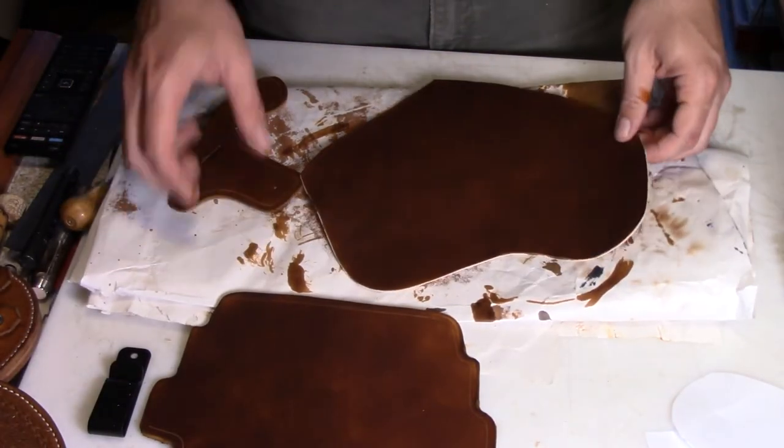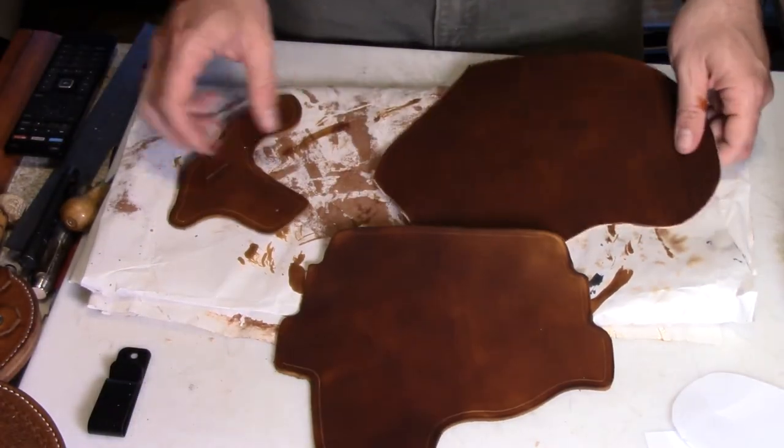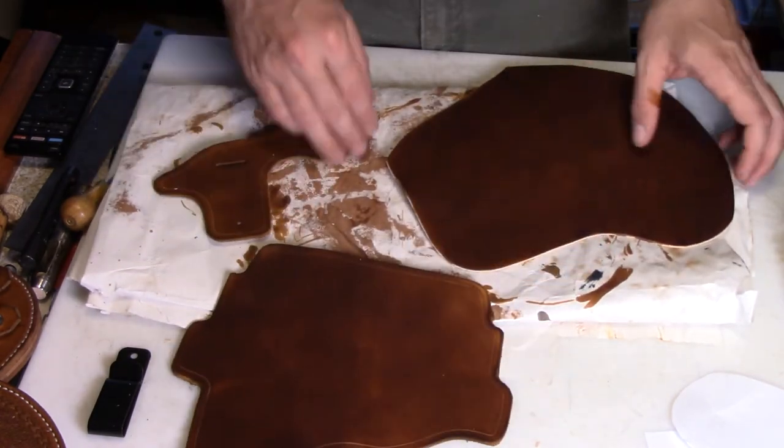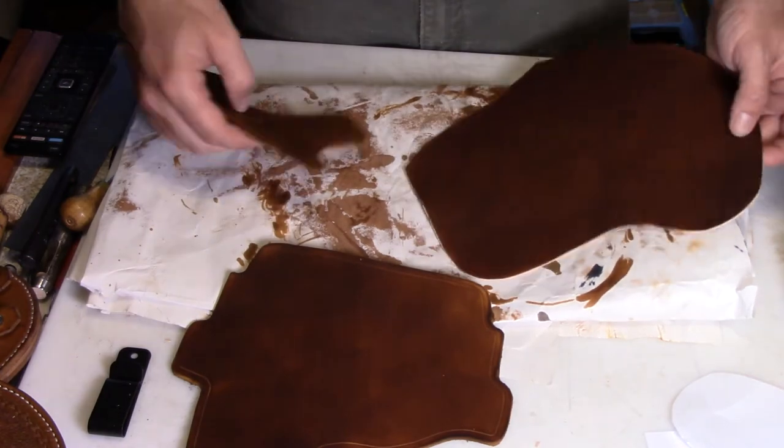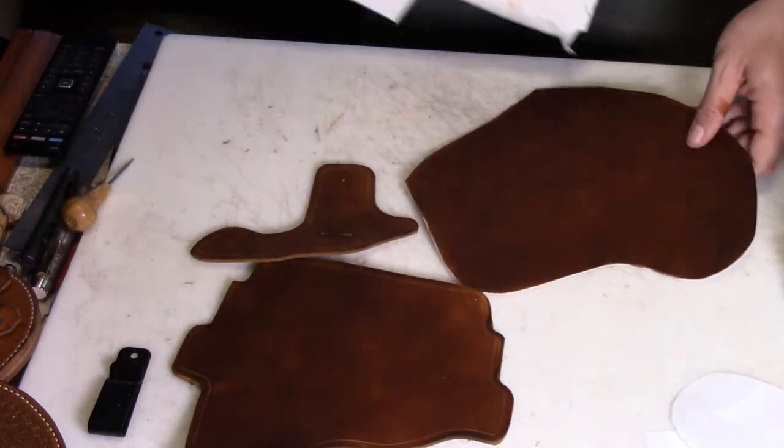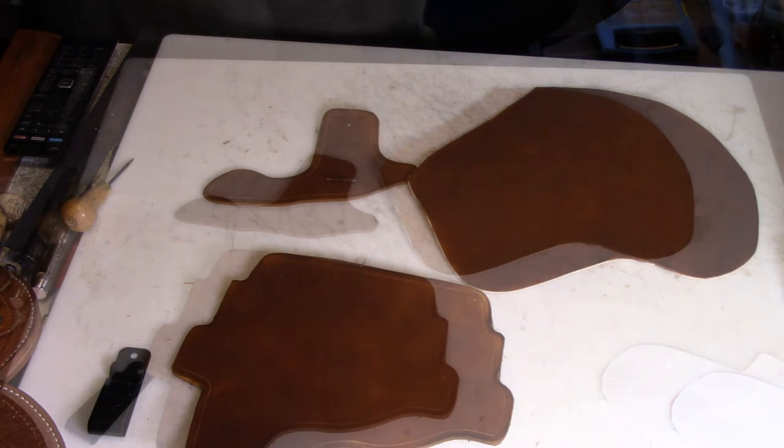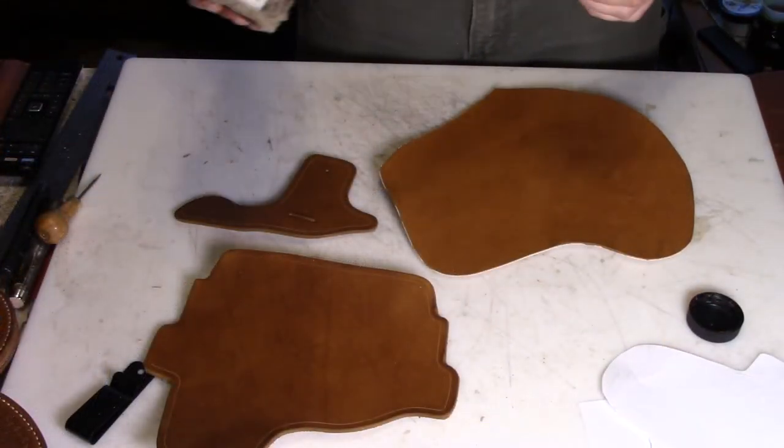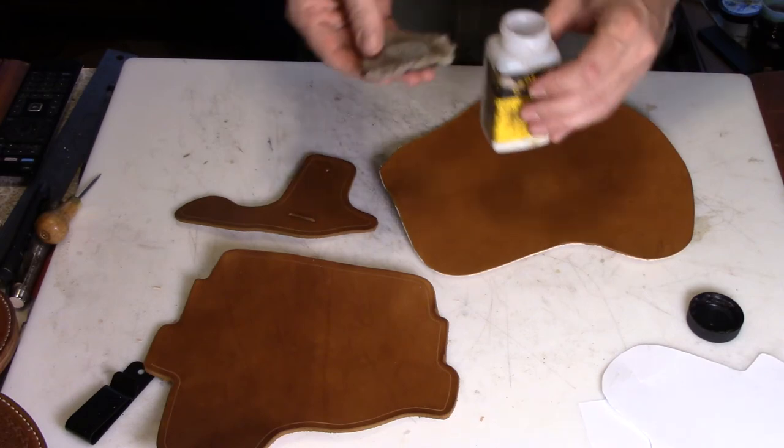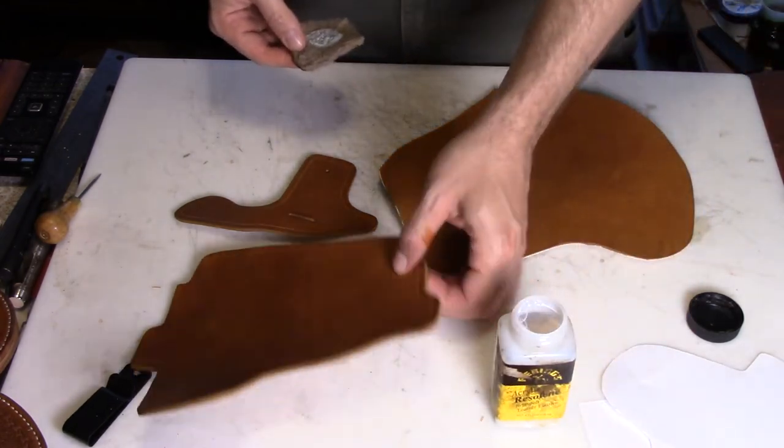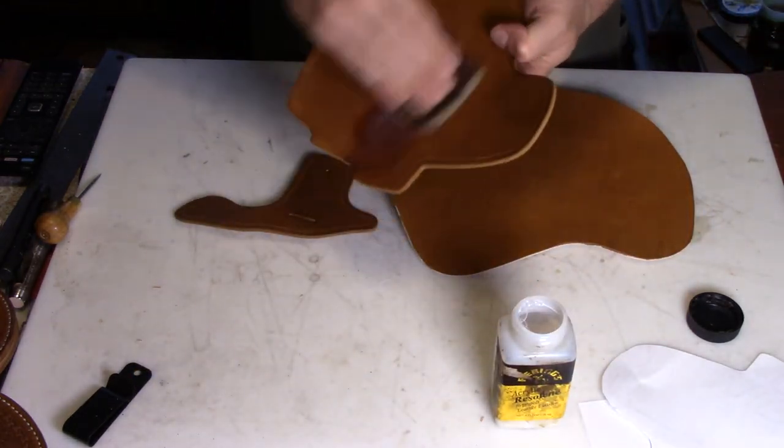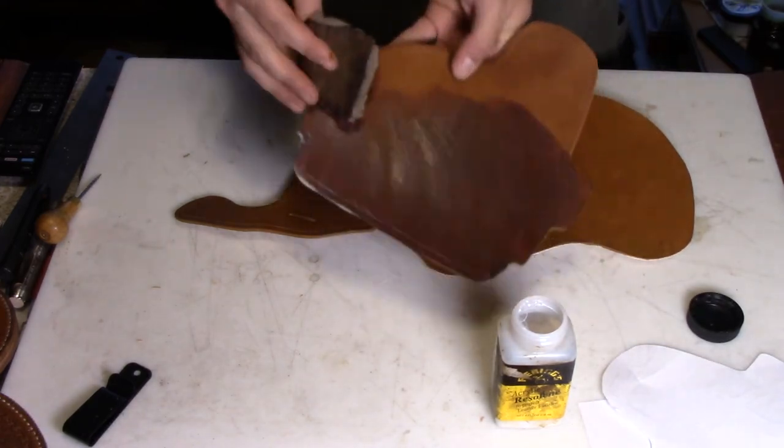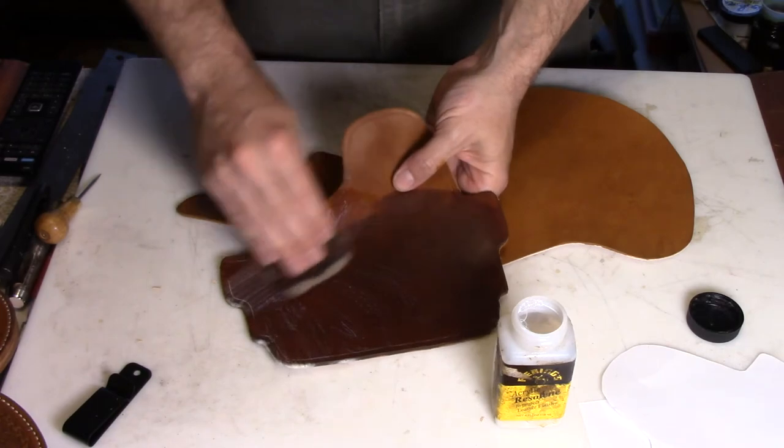That's all three pieces dyed up, and those will have to sit and dry for a little while. After it's had a chance to dry for about a half hour, I'm gonna use some restling to the finish and just put it on the sheet full scraps and sort of rub it into it.